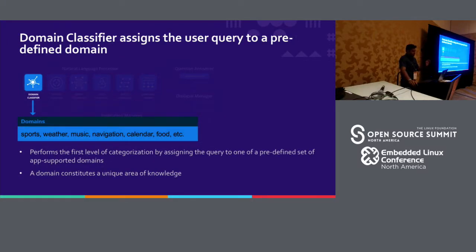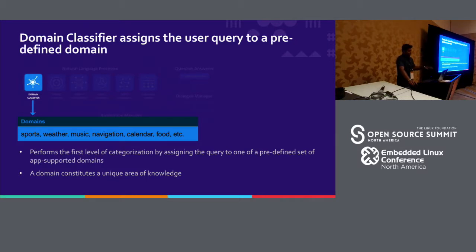Within the first sub-component of your NLP module, you have the domain classifier. This classifier classifies queries into bodies of knowledge — for example, if you say 'what's the weather in San Francisco,' that is a body of knowledge regarding weather as compared to sports. It's a text classification problem that uses machine learning to predict which particular domain a query belongs to.